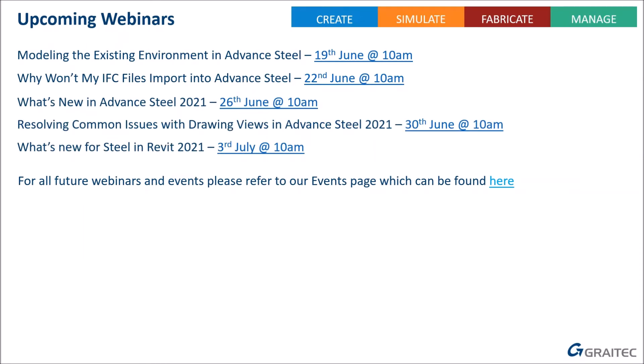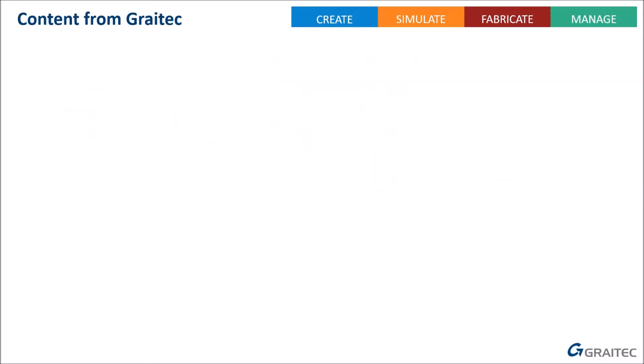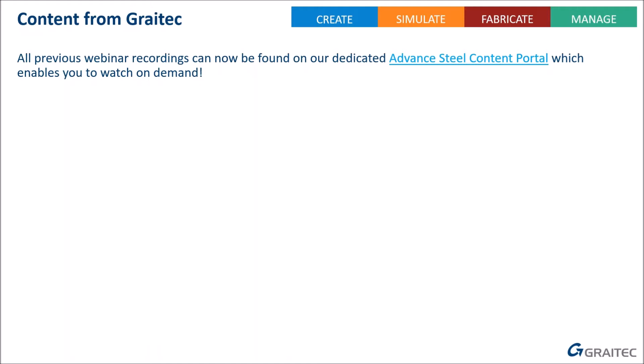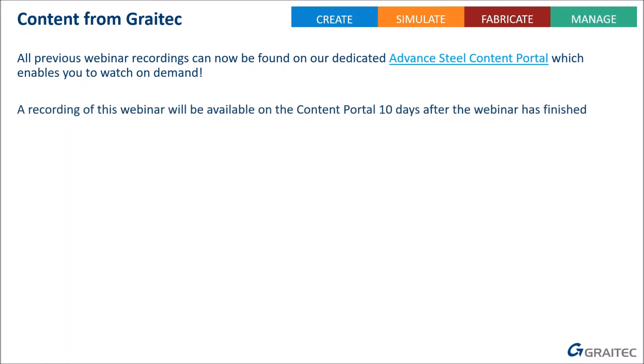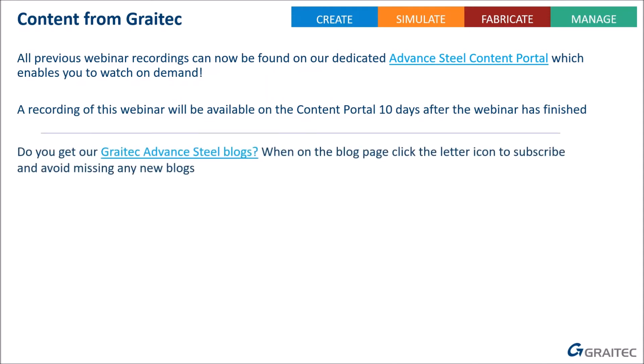This webinar is one of a series we do regularly. You may have missed the first one or two, but recordings are always available. Click the link to register for future upcoming webinars. This presentation is available as a PDF in the handout section of the GoToWebinar interface — all the links in that PDF will be live. Previous webinars are available on the Advanced Steel content portal, and this one will appear there within the next 10 days.